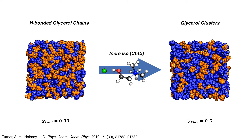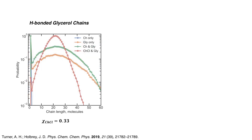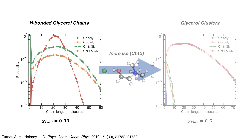Significant differences can be observed simply by observation of the simulation snapshots, with the long orange glycerol chains clearly present at the eutectic point, which are then severely constrained at higher salt concentrations. This qualitative evidence of hydrogen bond network disruption was confirmed through analysis of the chain length, conclusively showing that increasing salt concentration disrupts the hydrogen bond network of glycerol, causing a dramatic 90% reduction in glycerol-glycerol hydrogen bond chain length.